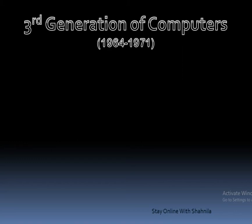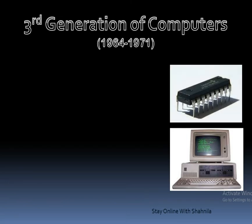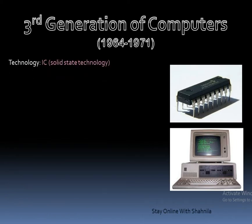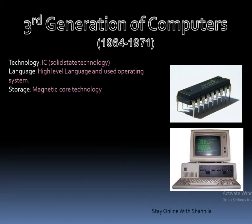The third generation of computers covered the period from 1964 to 1971. In third generation computers, ICs — Integrated Circuits — were used as the basic electronic element, using solid-state technology. Thousands of components were sealed in a small IC, which reduced the size of computers significantly. High-level languages and operating systems were also introduced in this generation. Magnetic core technology was used for storage.